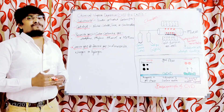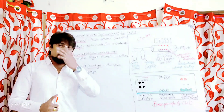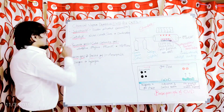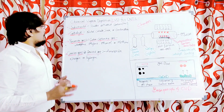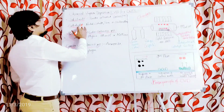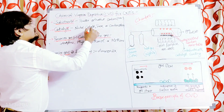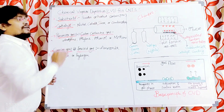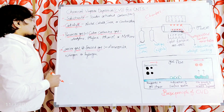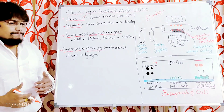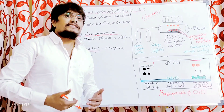The next important substance for the CVD method for the preparation of carbon nanotubes is the catalyst. Examples of catalysts that can be used include nickel, cobalt, iron, or a combination of these. Molybdenum can also be used.